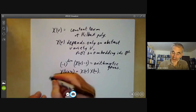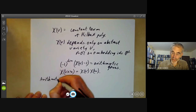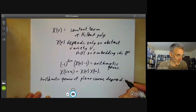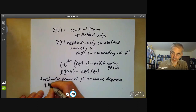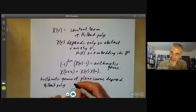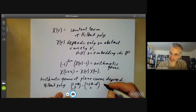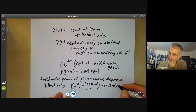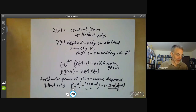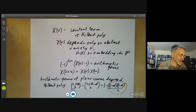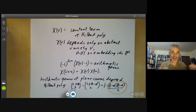For example, we can work out the arithmetic genus of a plane curve of degree d. The Hilbert polynomial of a plane curve of degree d is (2+k choose 2) minus (2+k−d choose 2), which equals 1 − (2−d)(1−d)/2, giving the value (d−1)(d−2)/2. In the special case of plane curves, the arithmetic genus happens to be the same as the topological genus defined by the number of handles of the underlying topological space.